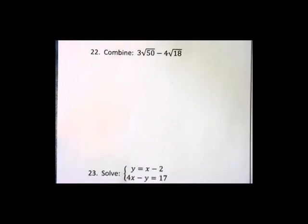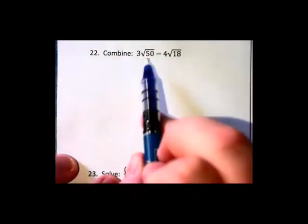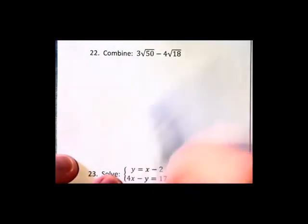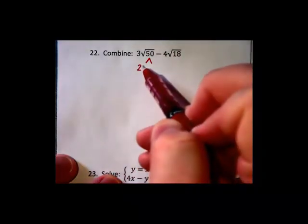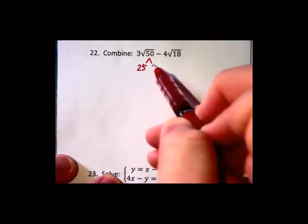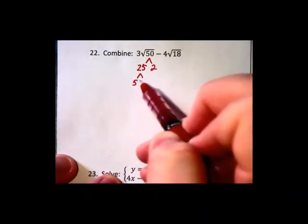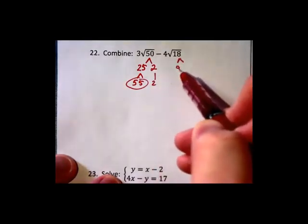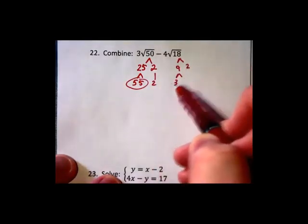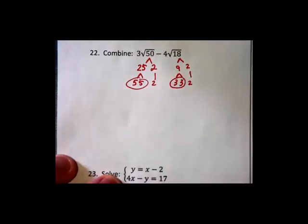Number 22. I cannot add if the radicands are different but I can try simplifying each first. The 50 becomes 25 times 2 which breaks down into a pair of 5's times the 2, and the 18 breaks down to a 9 times 2, and that 9 breaks into a pair of 3's times the 2.